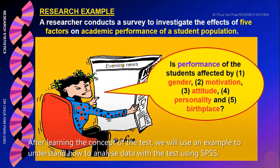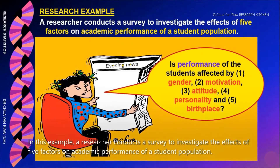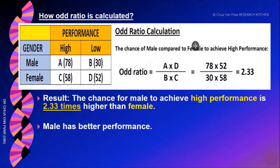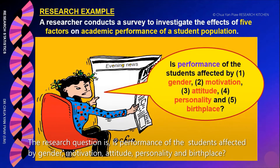After learning the concept of the test, we will use an example to understand how to analyze data with the test using SPSS. In this example, a researcher conducts a survey to investigate the effect of five factors on the academic performance of a student population. The research question is: is performance of the students affected by gender, motivation, attitude, personality, and birthplace?